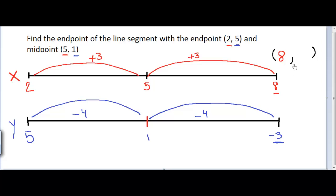So now we know that our Y coordinate is negative 3. And so the endpoint would be (8, -3).